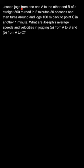Hi, the question says Joseph jogs from one end A to the other end B of a straight 300m road in 2 minutes 30 seconds, and then turns around and jogs 100m back to point C in another 1 minute.